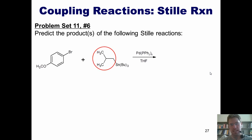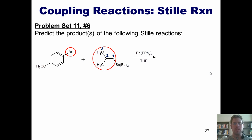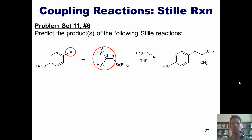The next question I ask is: where is my halogen? It is located right here. For the sake of keeping track of things, I've numbered the carbons in our other group attached to our tin as 1, 2, and 3. When I react these two molecules in the presence of palladium tetrakis-triphenylphosphine and THF solvent, I end up replacing the bromine with the whole group attached to my tin, giving me this product with the carbons numbered 1, 2, and 3. This is what a Stille reaction does.